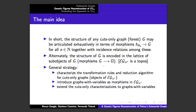In almost the same terms, we can think of these things as sub-objects of an arbitrary graph G — morphisms from G into omega — because EG alpha star is a topos. Indeed, the sub-object classifier is a graph that happens to be an infinite graph with an interesting fractal structure. The strategy for modeling the alpha graph system is to characterize the transformation rules and the semantic reduction algorithm for cuts-only graphs, then introduce graphs with variables as morphisms in this category EG alpha star, and extend the cuts-only characterization to these graphs with variables.